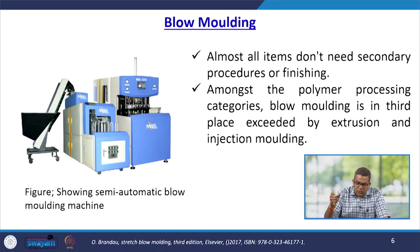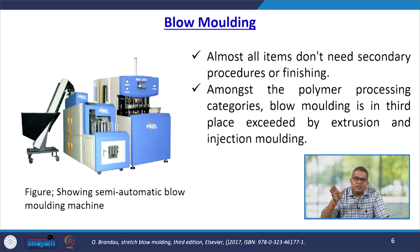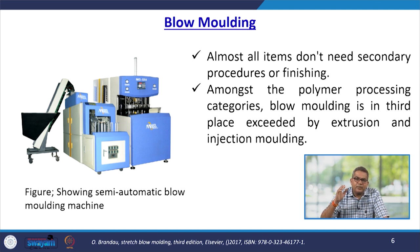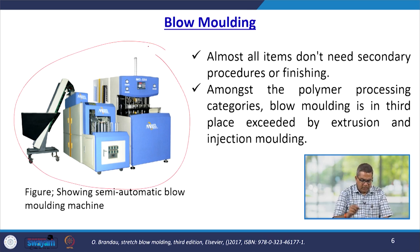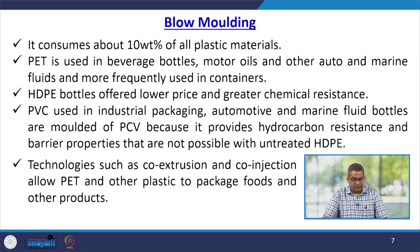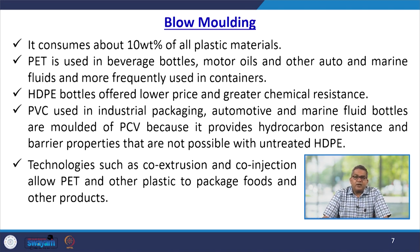Almost all items produced do not need secondary finishing. Among polymer processing categories, blow moulding is in third place, exceeded only by extrusion and injection moulding. Blow moulding consumes about 10% of all plastic materials.